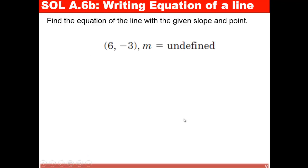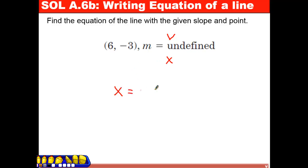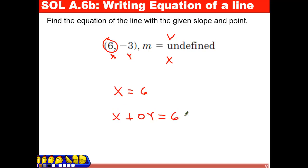Now, let's say I have a point but the slope is undefined. Remember, undefined slope means we have a vertical line — x equals something. That something is just the x-value of the given point, which is 6. So the equation of the line is x equals 6.